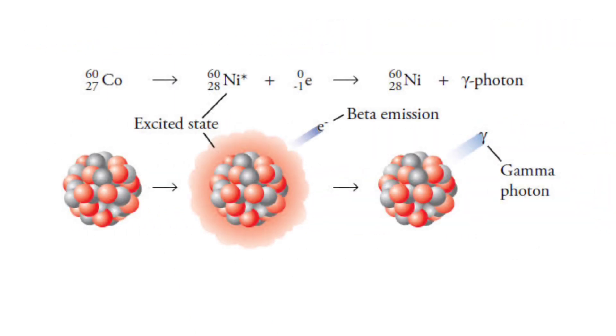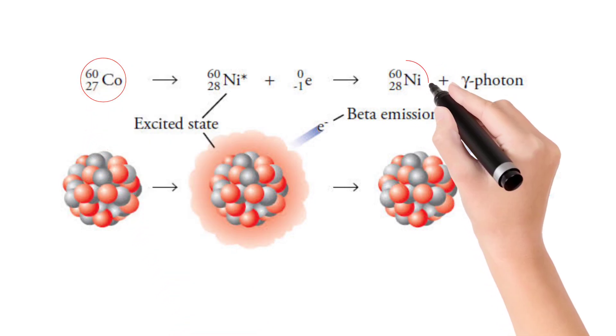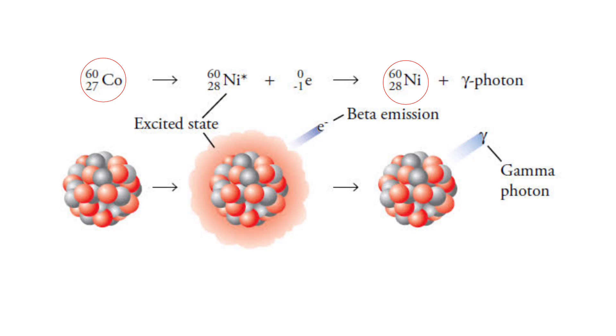For example, cobalt-60 disintegrates until it is converted into a stable element nickel, and during decay it emits beta particle and gamma radiation.